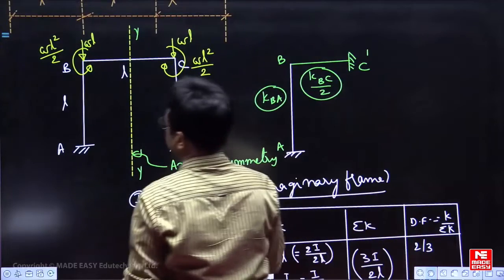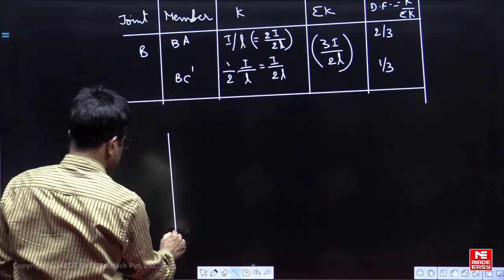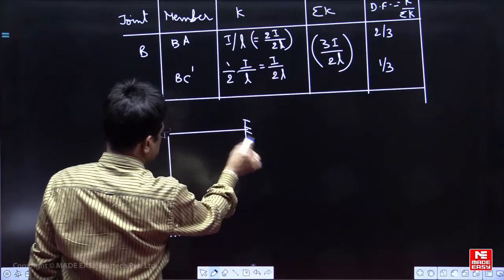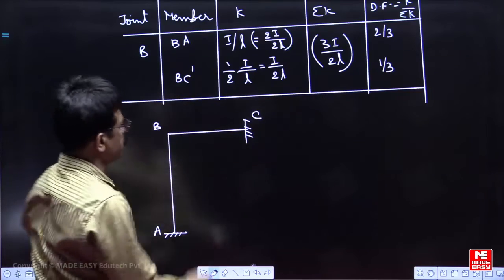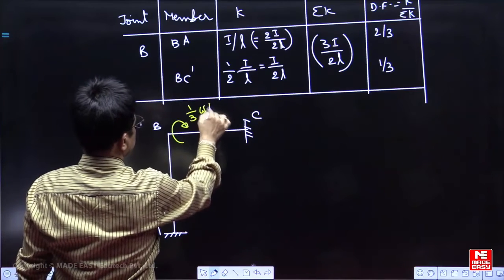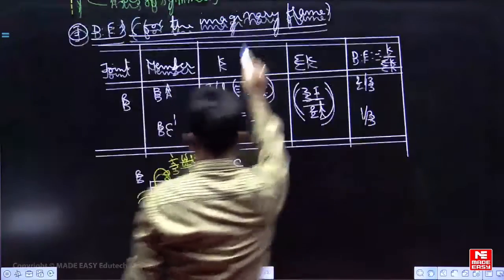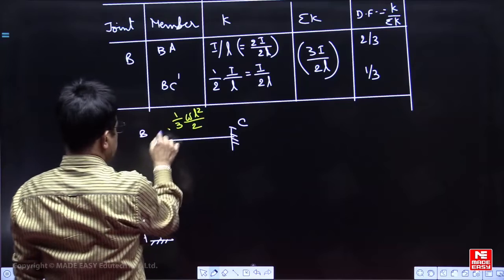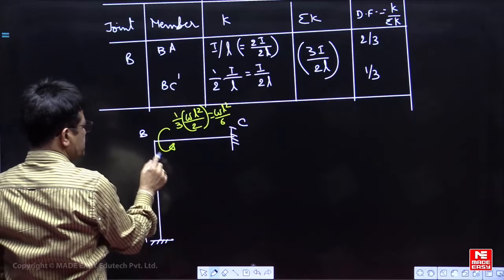This is our moment WL square by 2 anticlockwise. Directly we will write it here, this is your A, B, C. WL square by 2, BC dash will take 1 by 3, half of that. You will write here, one third of WL square by 2. This will be anticlockwise, same direction it will take. We have applied anticlockwise, here also it should be anticlockwise. Same direction, one third of WL square by 2, you will get WL square by 6 anticlockwise.